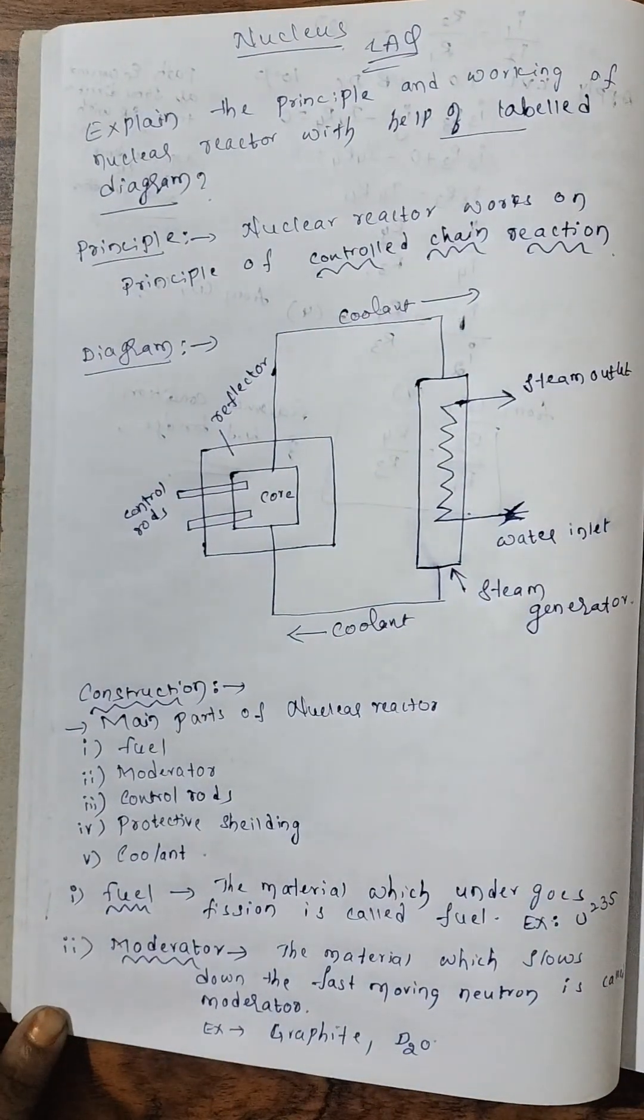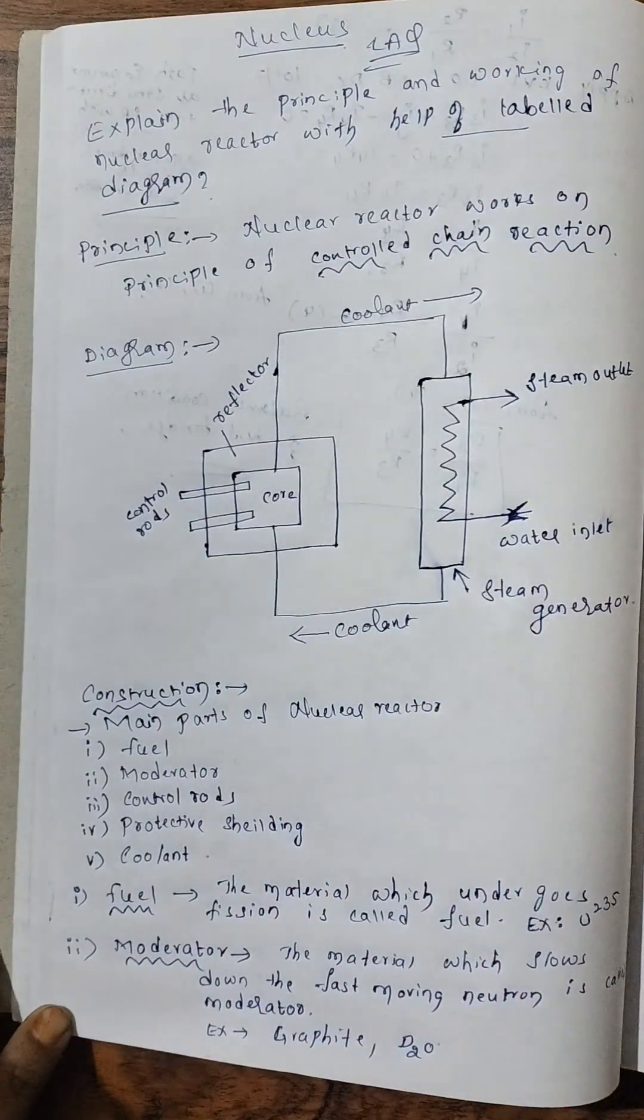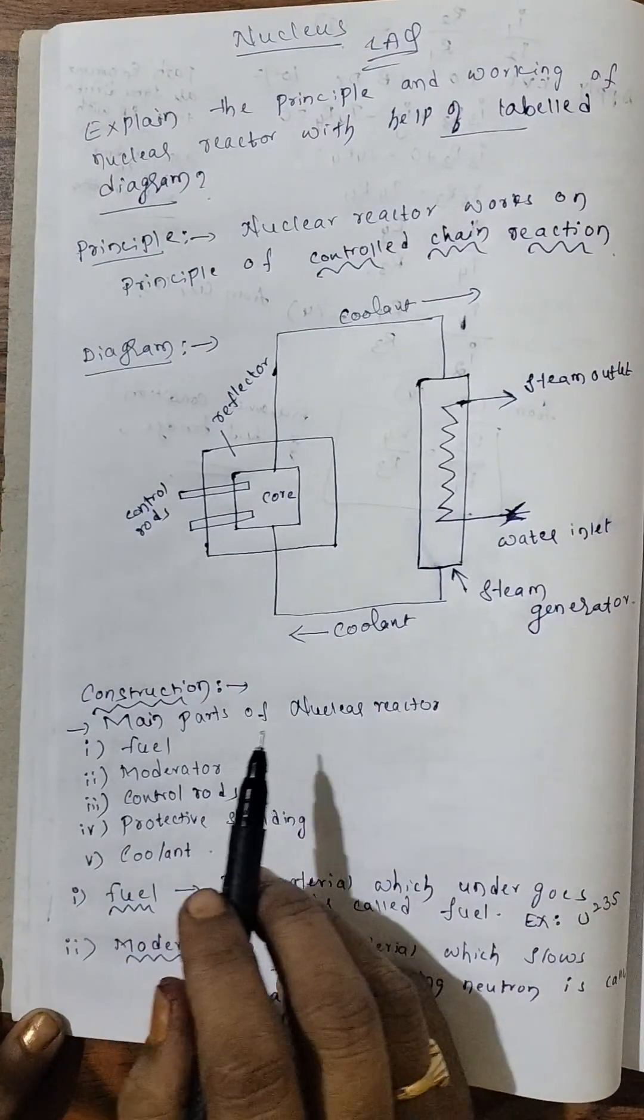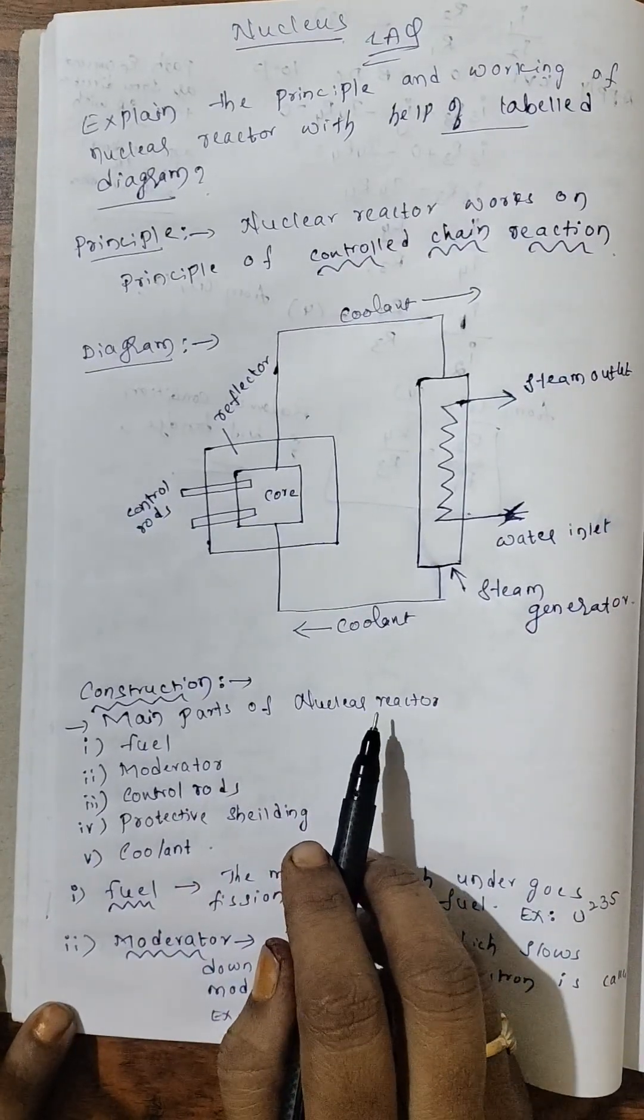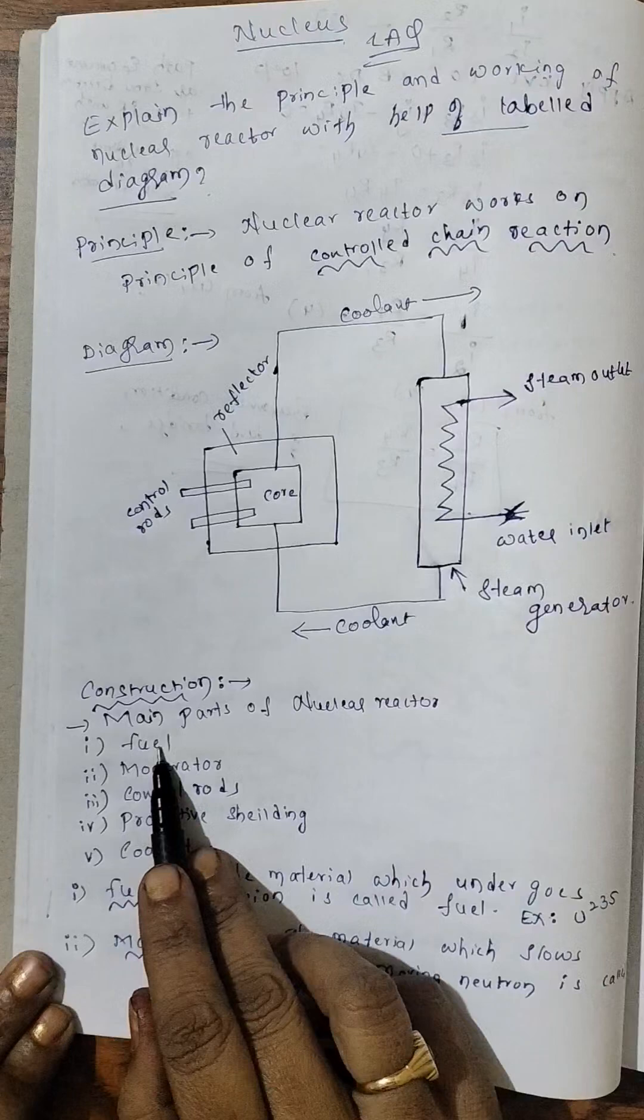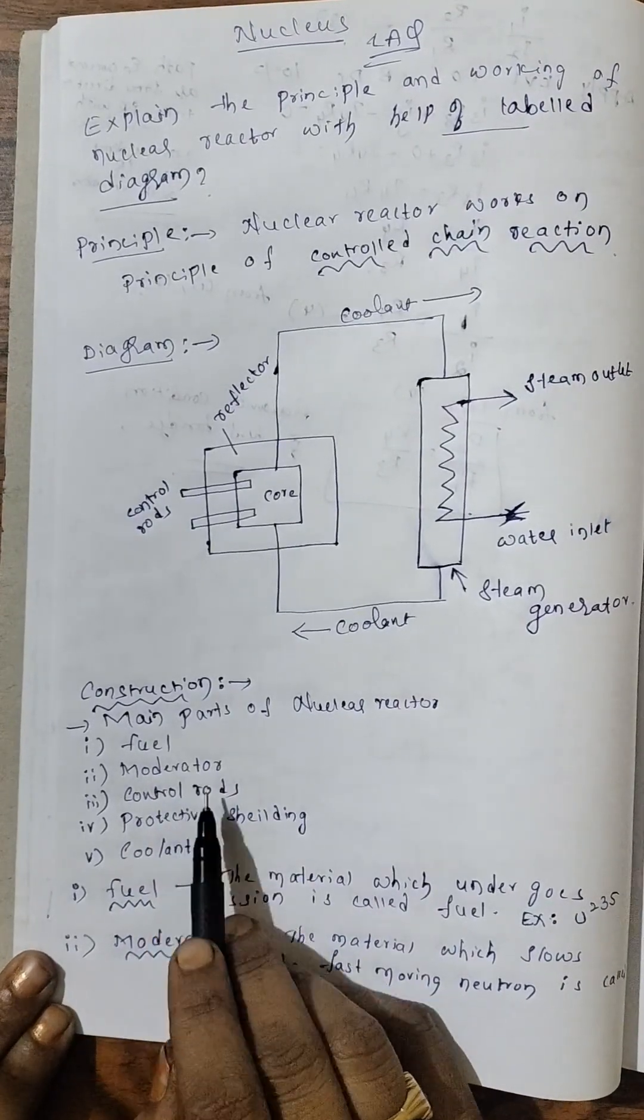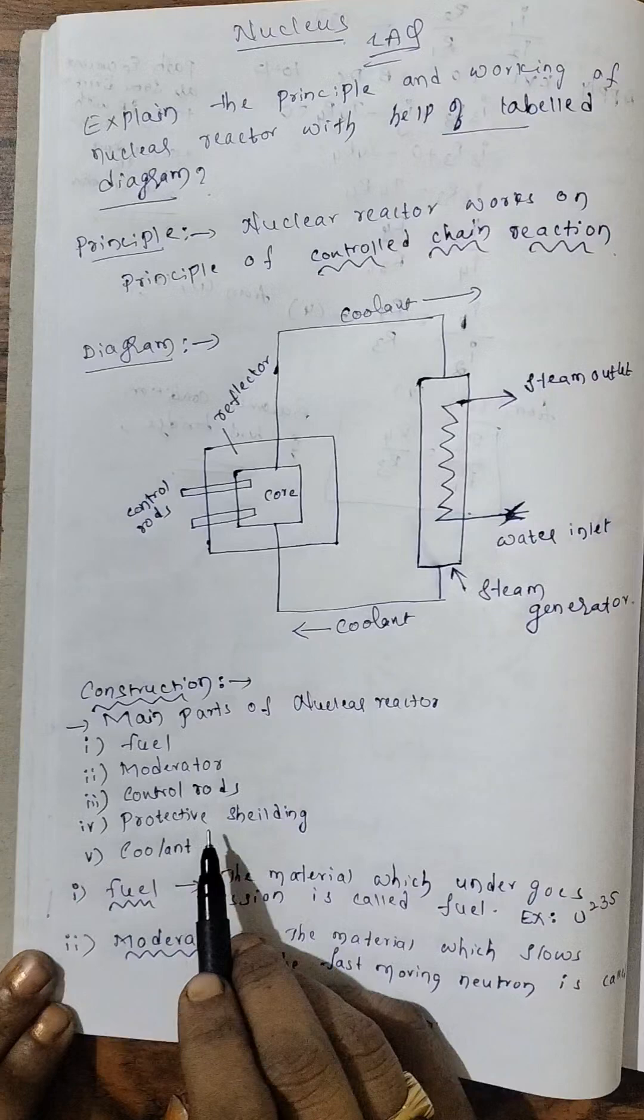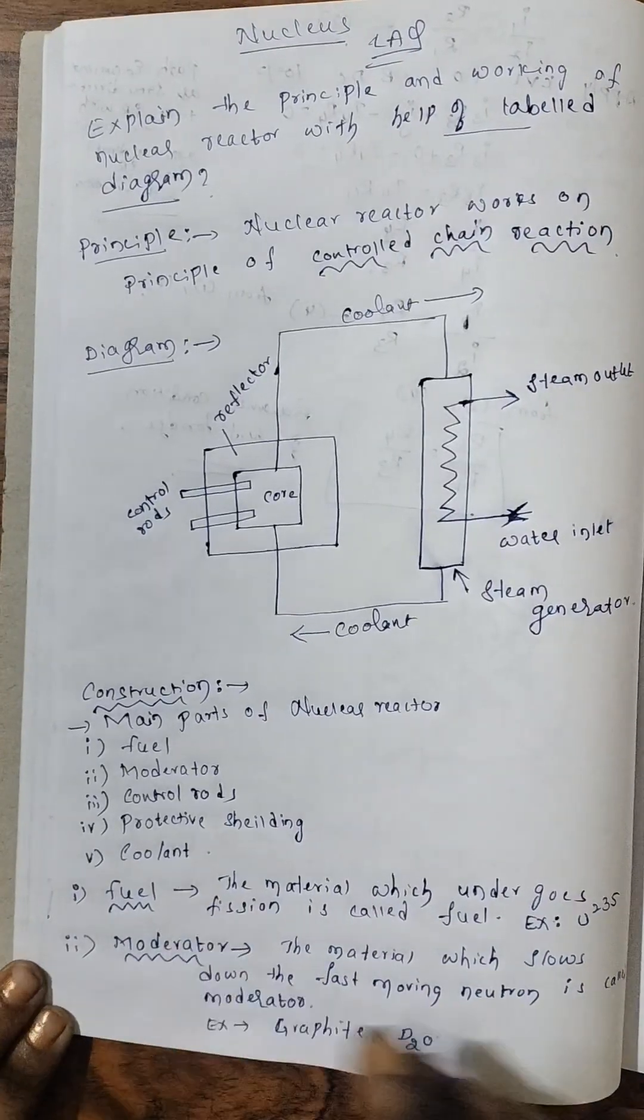Now next, draw the diagram. Now first let us go for the construction. So the main parts of nuclear reactor are fuel, moderator, control rods, protective shielding, coolant.